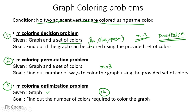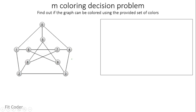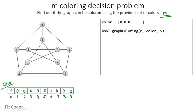We'll start with the M coloring decision problem. Our goal is to find out if the graph can be colored using the provided set of colors. The data structure we require is a color array, initialized to 0 for all vertices. We have a function graph coloring which returns a bool, accepting three parameters: the value M, the color array, and the vertex.